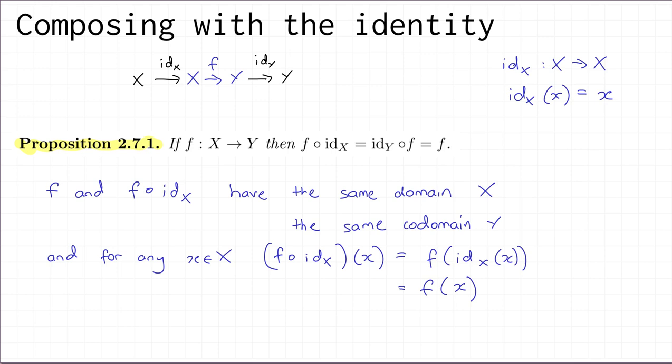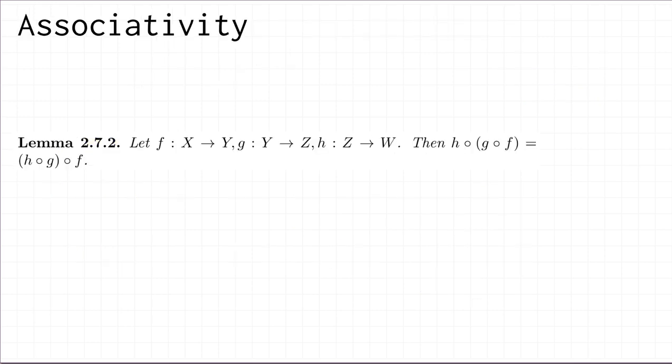You can check the other composition the same way. The summary is that when you compose with the identity, nothing happens.